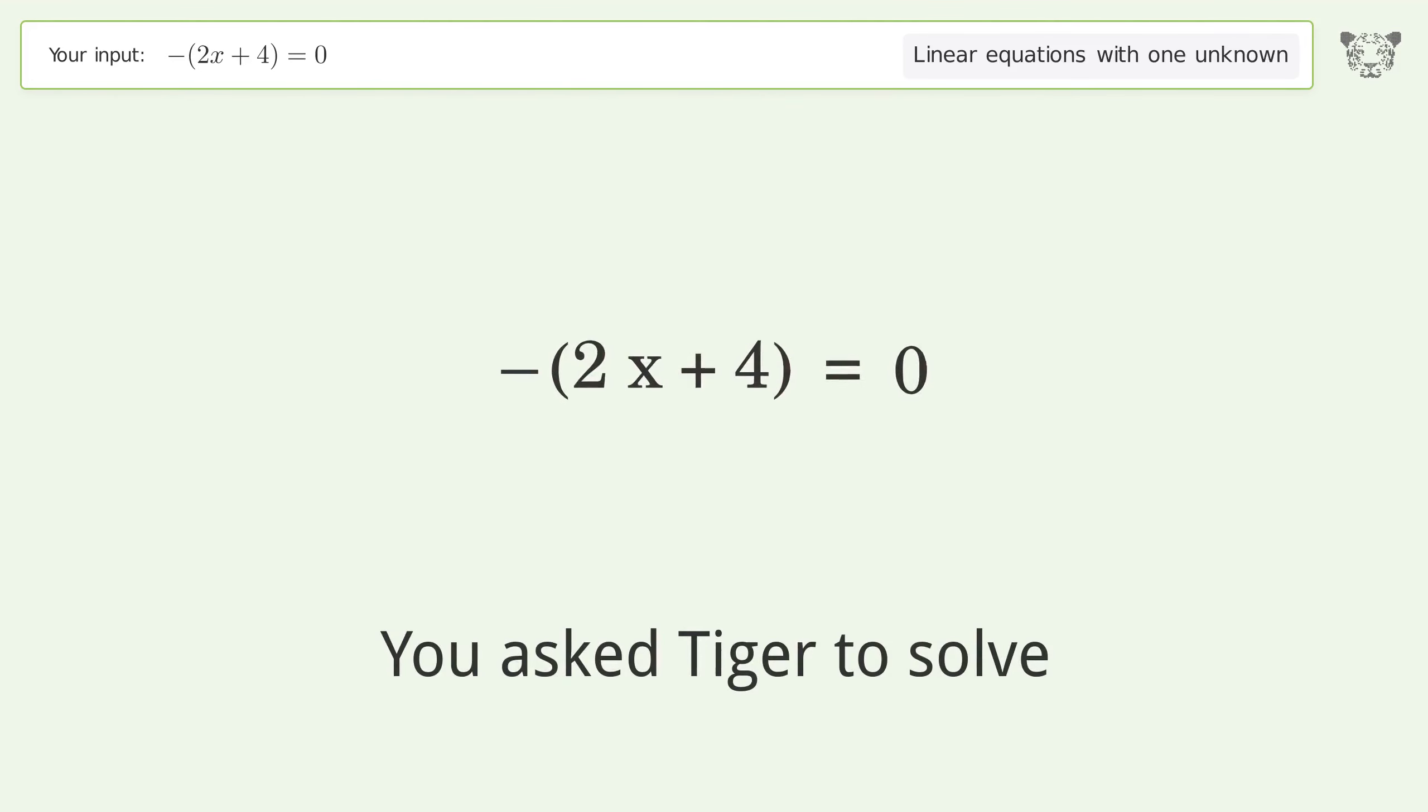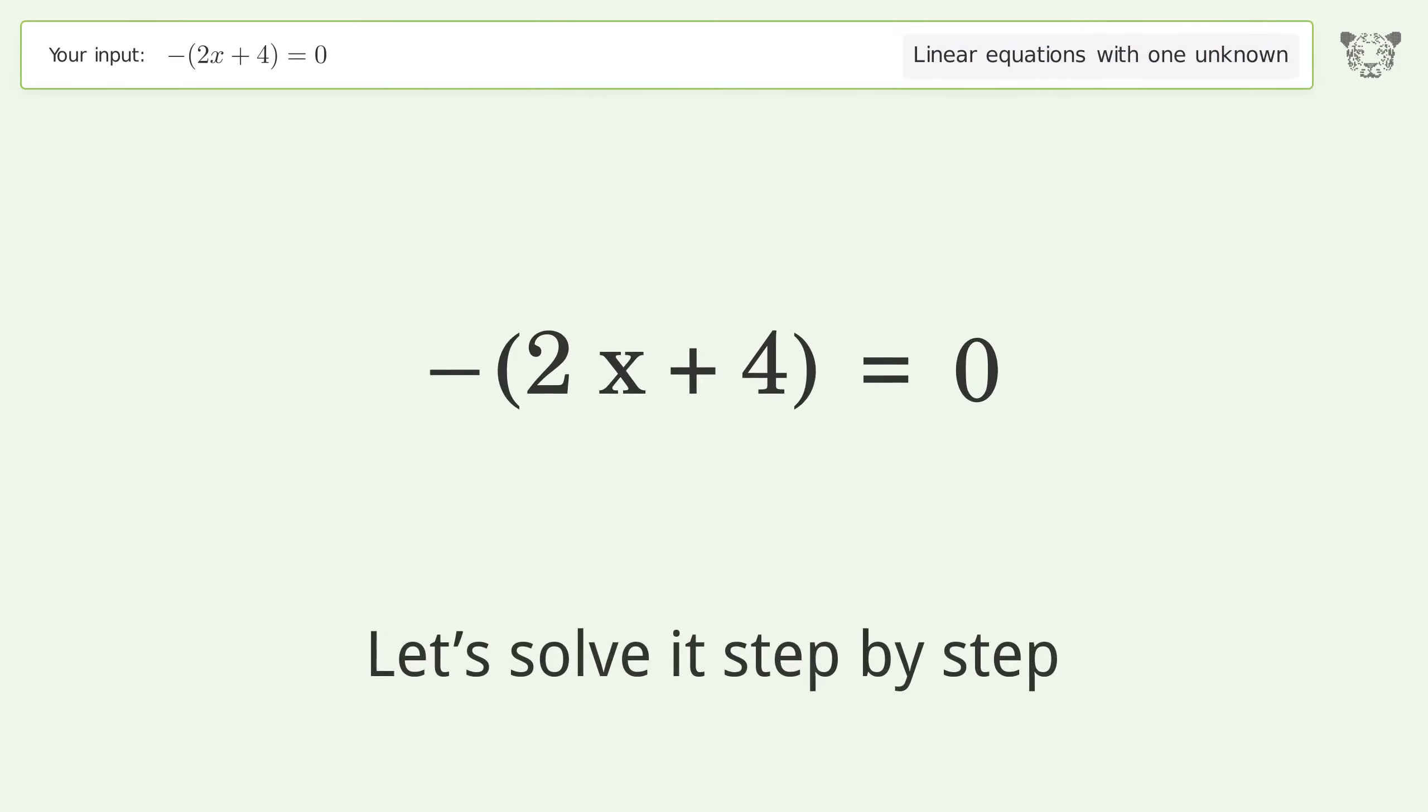You asked Tiger to solve this. Deals with linear equations with one unknown. The final result is x equals negative 2. Let's solve it step by step. Simplify the expression.